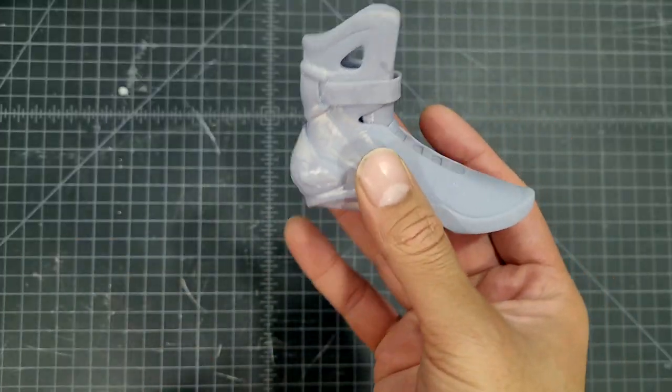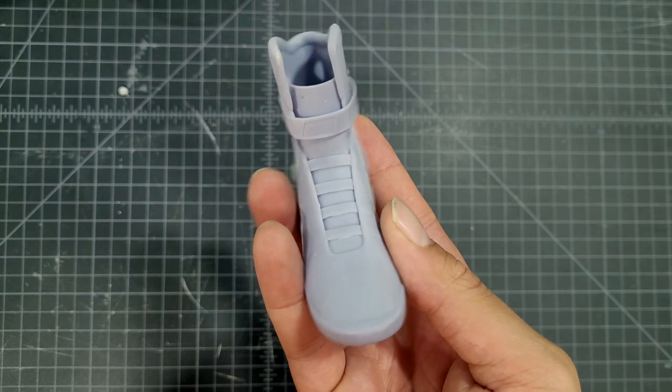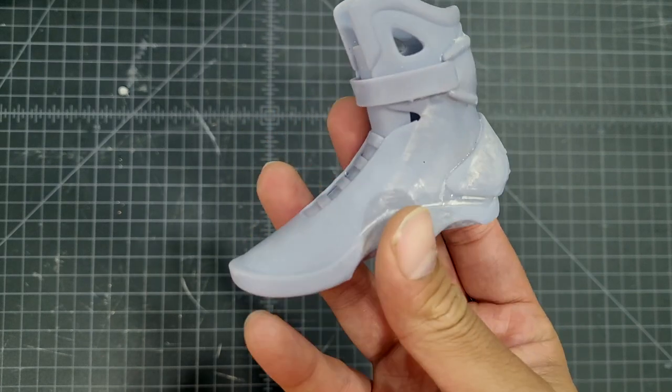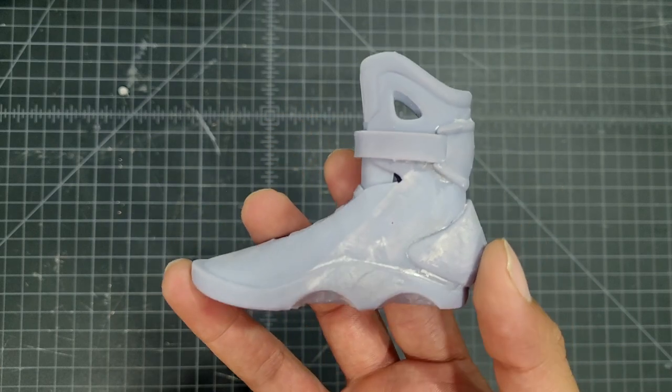You ever cure a resin print, take it out of a curing station, and realize you messed up? Turns out you didn't let it dry properly, and it came out with this chalky residue on it. Yeah, sometimes impatience gets the better of us.